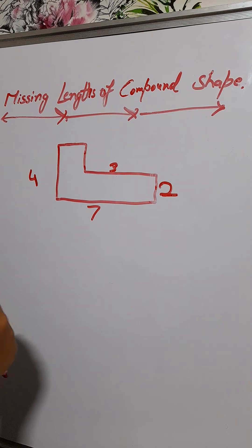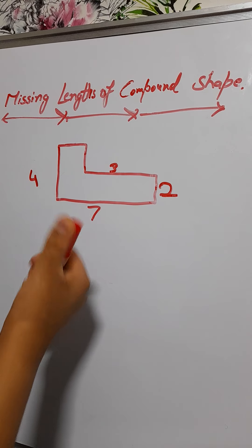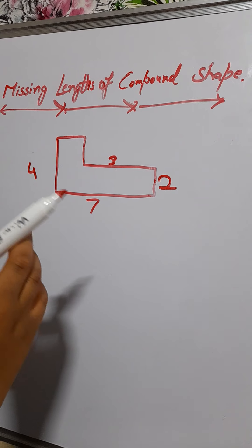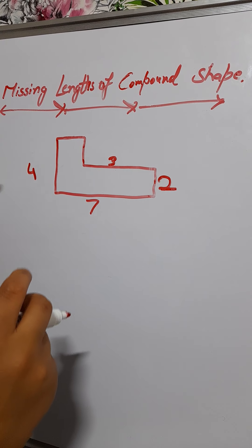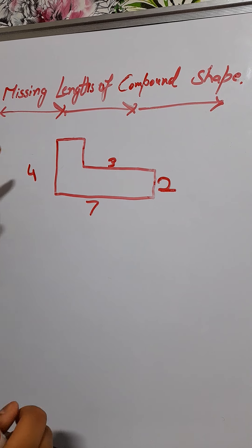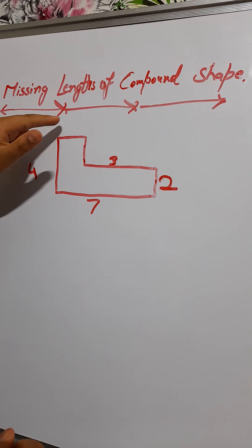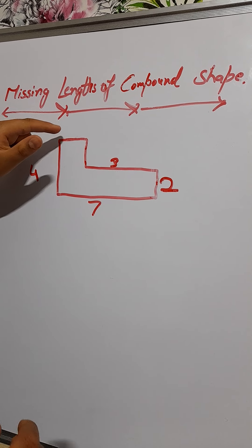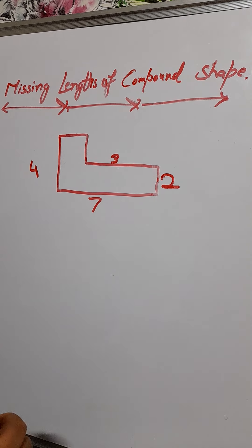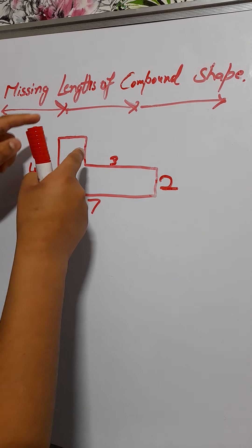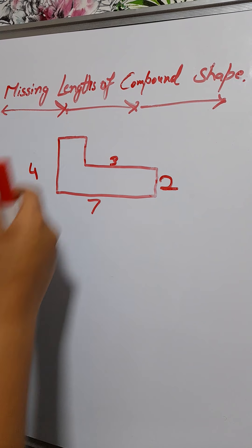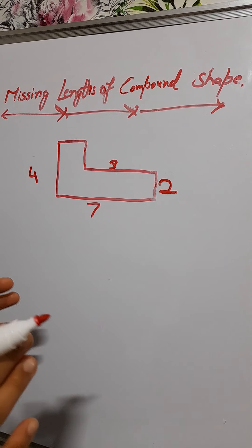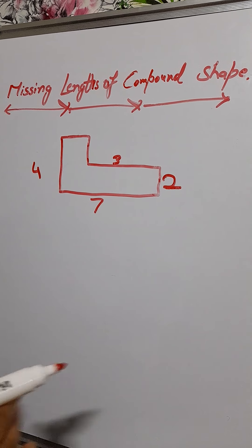This is a square and rectangle mixed together — those are the shapes that make up this compound shape. What we have to do is find the missing lengths here, and we will also show how to find the area of a compound shape.